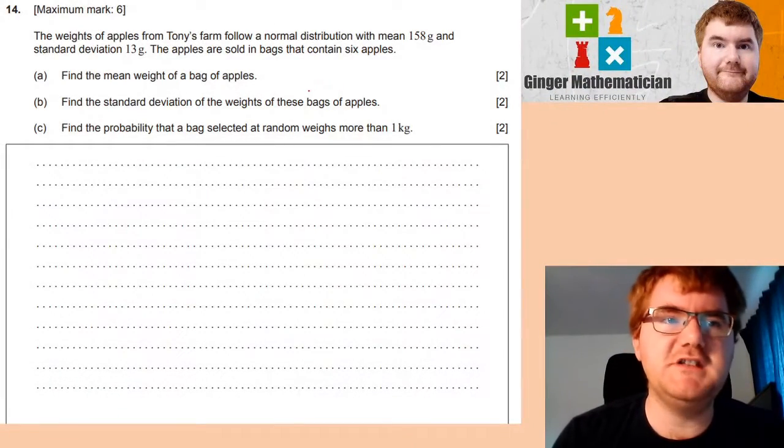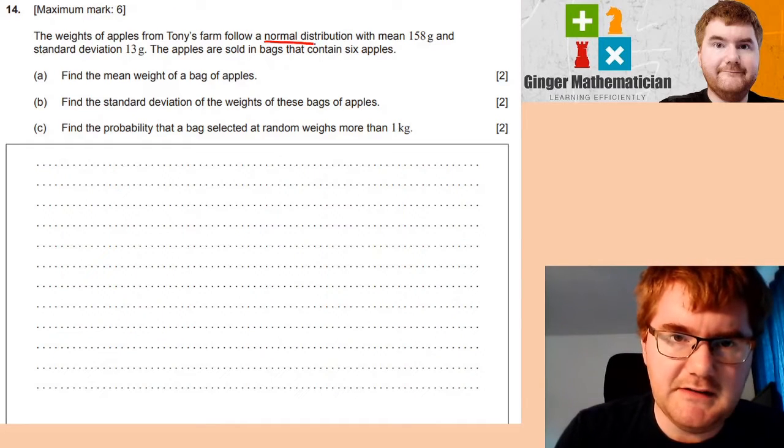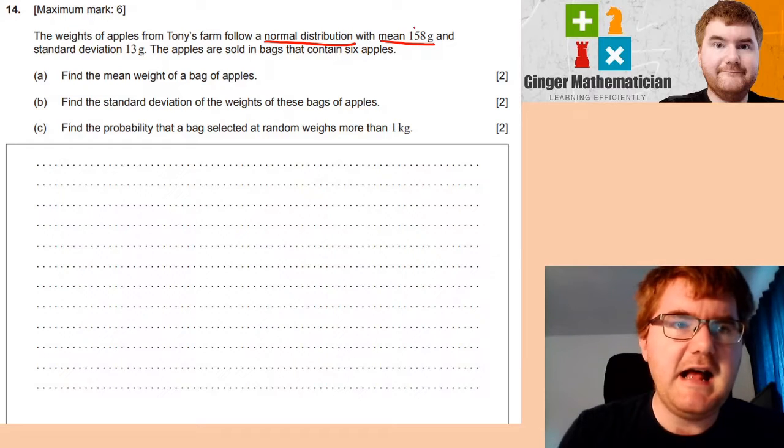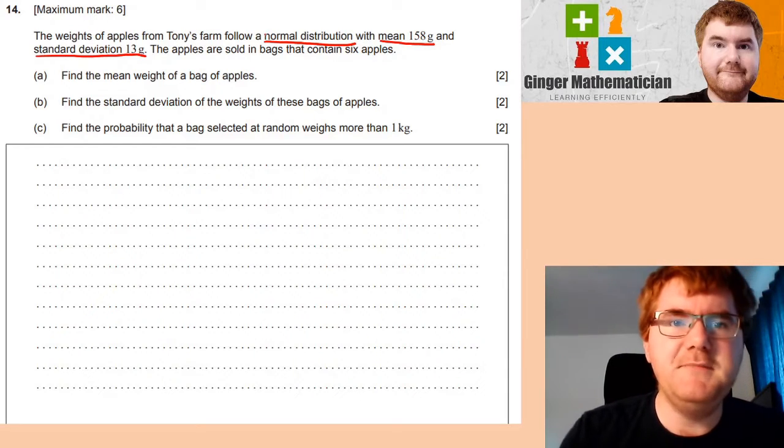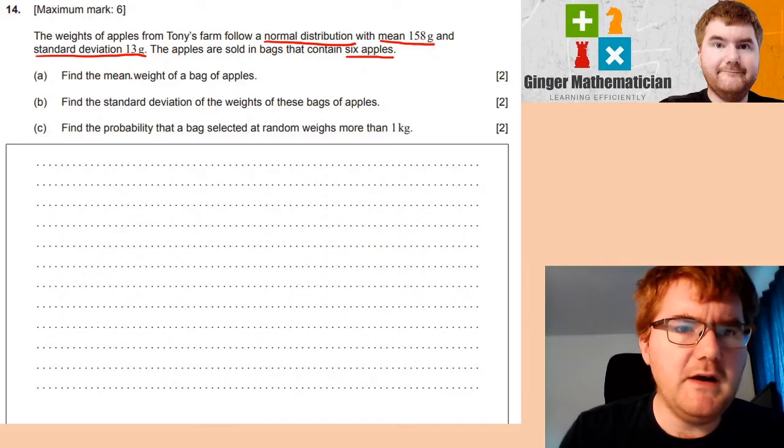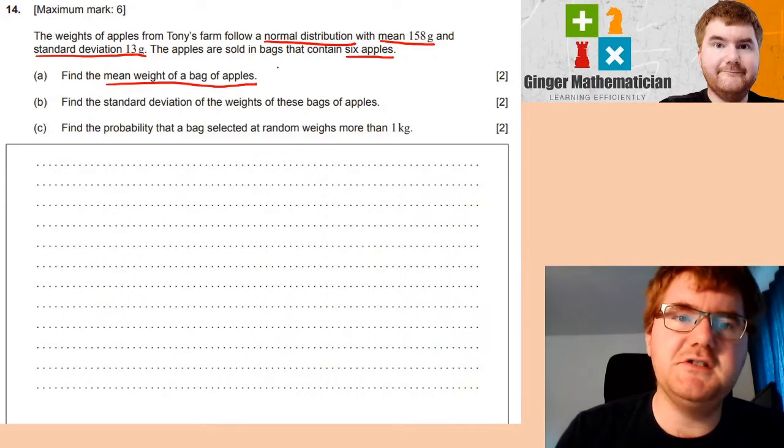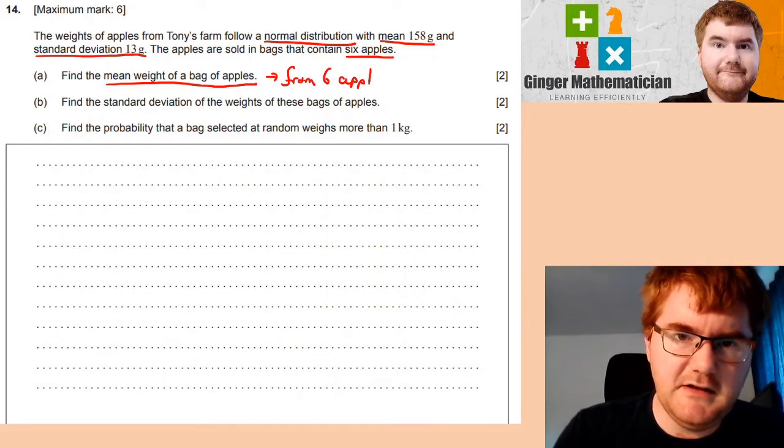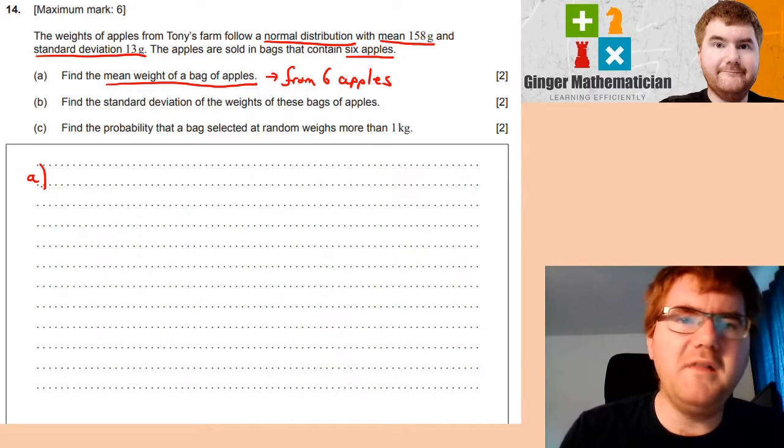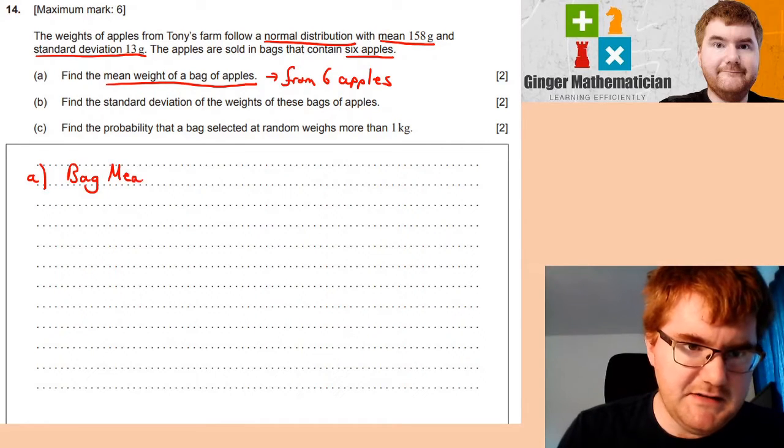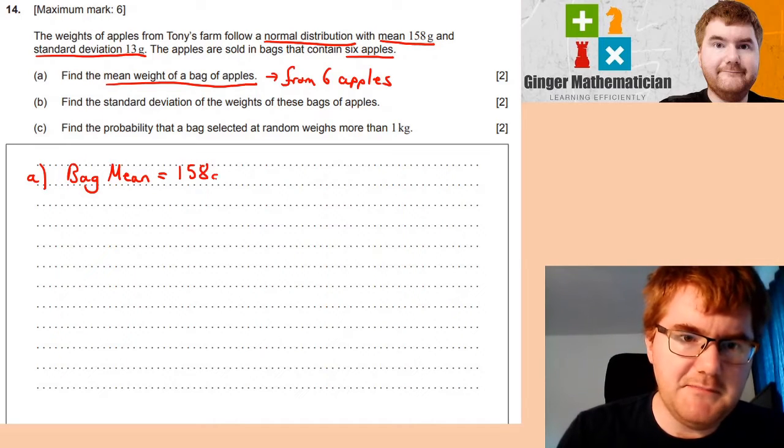Okay, and on to question 14. A nice stats question. We have the weight of apples from Tony's farm follow a normal distribution. I'm going to underline that, particularly on high level because we work with quite a few distributions, with mean 158 grams and a standard deviation of 13 grams. The apples are sold in bags that contain six apples. First, we need to work out the mean weight of a bag of apples. So essentially the question is asking the mean weight from six apples.